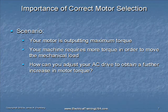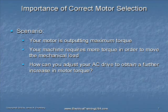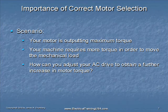Let's suppose that your motor is outputting maximum torque. Let's suppose also that your machine now requires more torque in order to move the mechanical load. Perhaps your owner has decided to add load to the machine — perhaps we want to move a material that's heavier in viscosity, or perhaps we want to add additional load to a conveyor. How can you adjust your AC drive to obtain a further increase in motor torque? Well, if your motor is already outputting maximum torque, you cannot adjust the drive to obtain more torque.